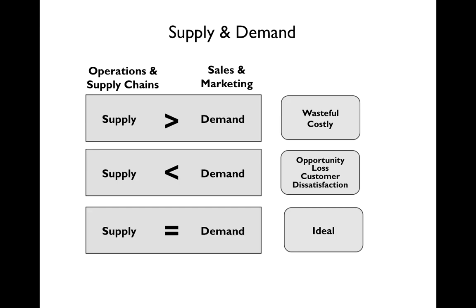If supply is way less than demand — like when you walk into a restaurant and keep ordering items only to be told they're out — the customer becomes dissatisfied and may leave without buying anything, and might not return. The ideal scenario is where supply equals demand — you have exactly the right amount of products or services to meet demand.